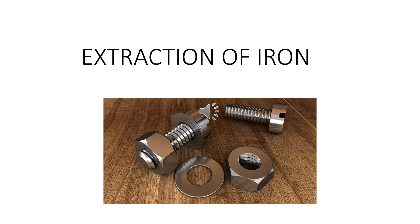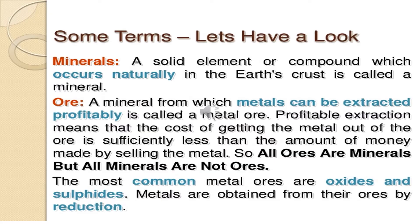Let us see how the extraction process takes place. Before learning extraction of iron, let us understand the different important terms. Students are always getting confused between minerals and ore. Let us understand first what is minerals. Minerals are naturally occurring chemical substances in which metals occur in the earth's crust. In simple words, compounds which occur naturally in the earth's crust are called minerals.